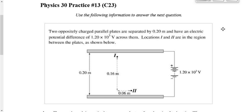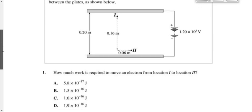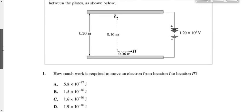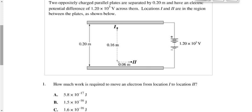Practice question set number 13 starts off with a tough one. Number one says we have two oppositely charged parallel plates that are separated by 0.2 meters and have an electric potential difference of 1,200 volts across them. Locations 1 and 2 in the region between the plates are shown in the diagram. The question asks how much work is required to move an electron from location 1 to location 2.